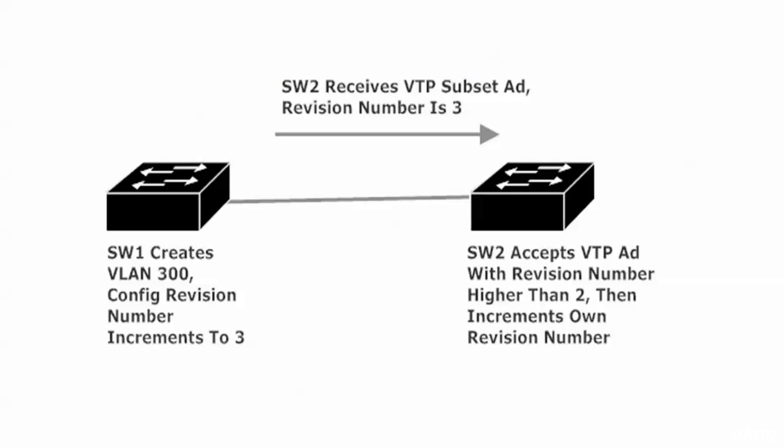To walk through those steps one more time: a VLAN is created on switch one, the CRN is incremented, then the advertisement is sent out. The advertisement is received, the CRN is compared. If the CRN of the incoming ad is higher, it's accepted, and the switch overwrites its own database with the information in that VTP ad, then increments its own revision number.